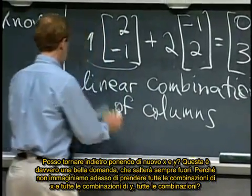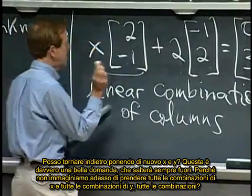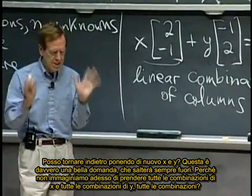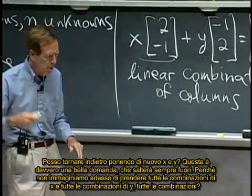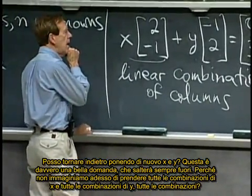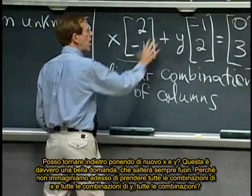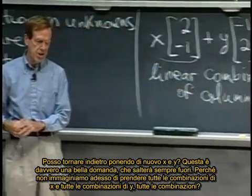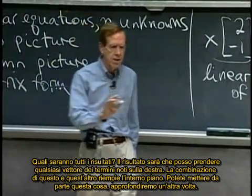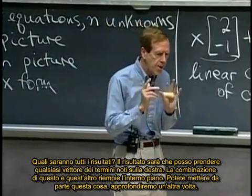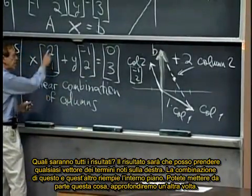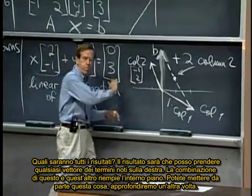What are all the combinations? If I took all the x's and all the y's, all the combinations, what would be all the results? And actually the result would be that I could get any right hand side at all. The combinations of this and this would fill the whole plane.